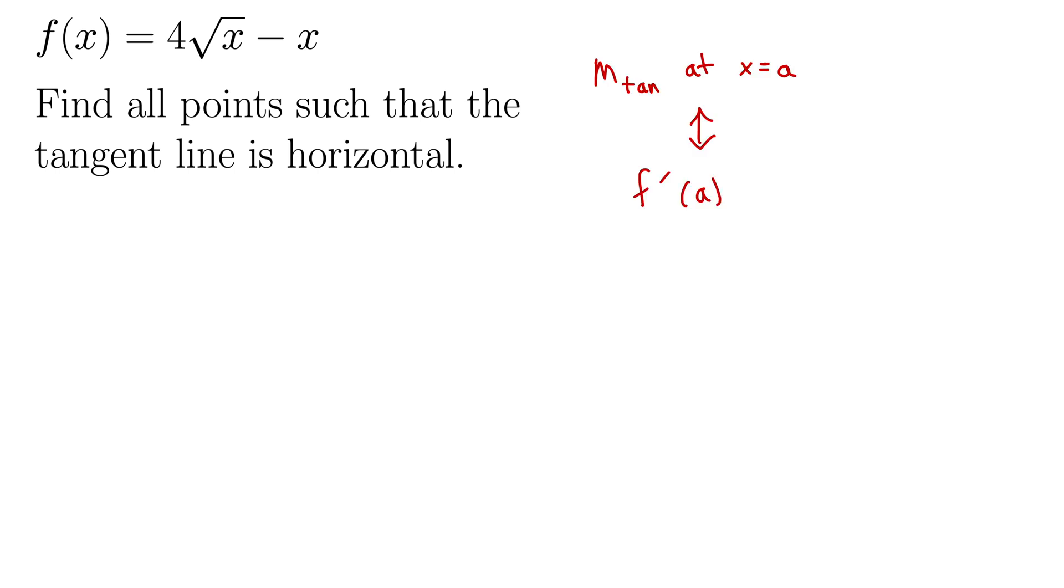Now, this example wants us to find the points where the tangent line is horizontal. Well, what's the slope of a horizontal line? Right. It's 0.